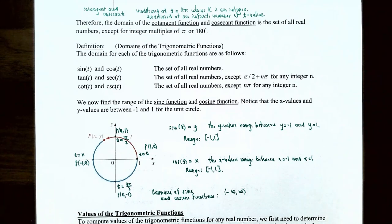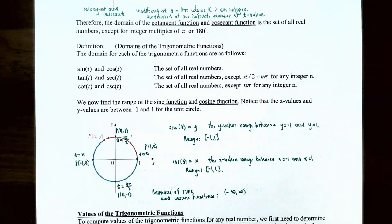To wrap up, we talked about how to find the function values for the six trigonometric functions for 30, 45, and 60 degrees — or their equivalent angles in radians: pi over 6, pi over 4, and pi over 3. We also talked about how to identify the domain and range of the trigonometric functions. If you have any questions, please let me know, and I'll see you in the next video.